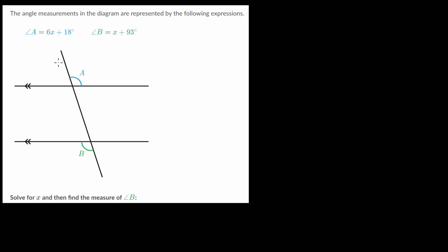Let's look at a couple more example problems where we're finding missing angles using equations. With this example problem, we are given an expression for angle A and for angle B, and we need to solve for x and then find the measure of angle B.